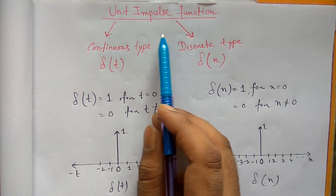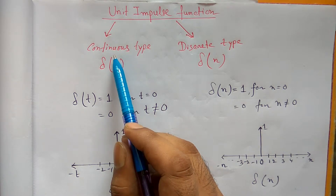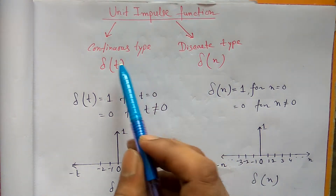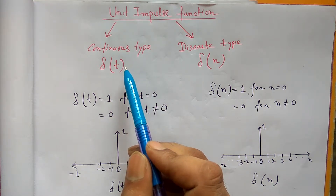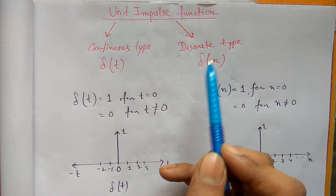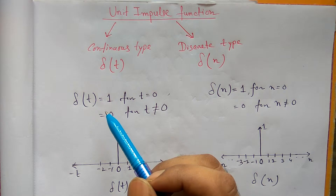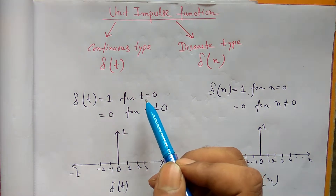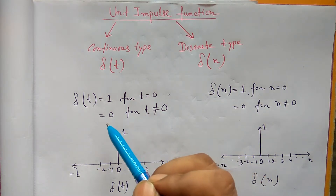Unit impulse function is of two types: it may be continuous type or discrete type. Continuous type unit impulse function is expressed as δ(t) and discrete type is expressed as δ(n). Mathematically, δ(t) equals 1 for t equal to 0, and for other values of t, δ(t) is 0.